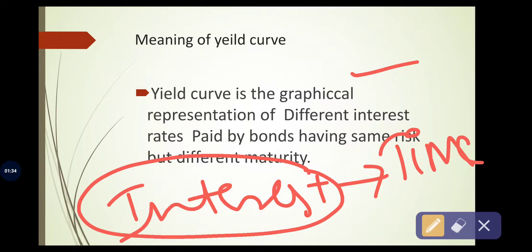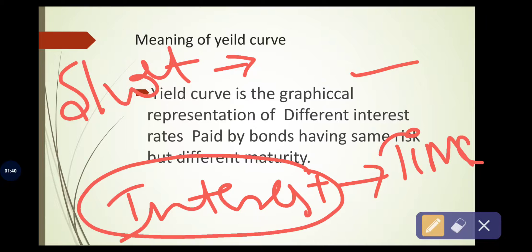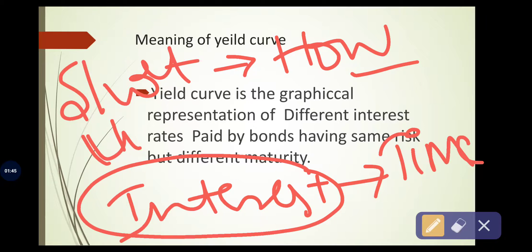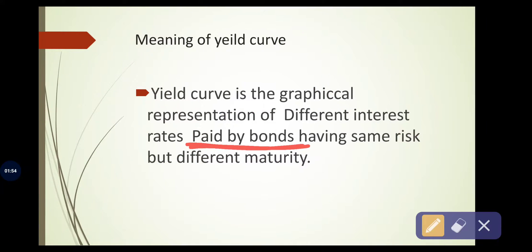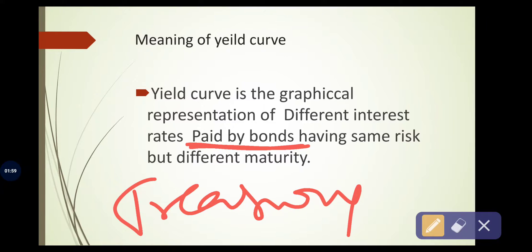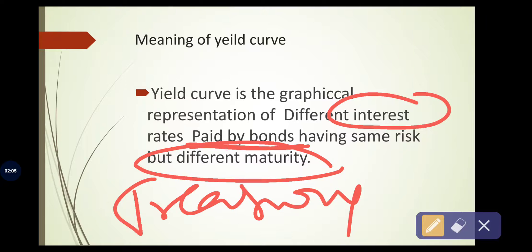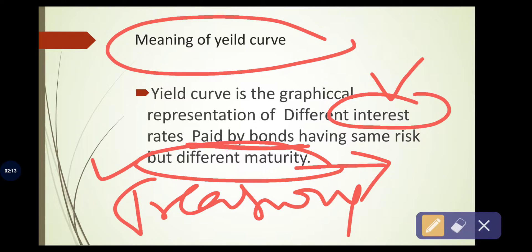For example, in short-term periods, how much interest is earned by bondholders, and in the long term, how much interest they are getting. Simply, it is talking about the interest payments of bonds and treasury bills issued by the central government — interest rates with reference to maturity. When we graphically represent interest with respect to time period, it is called a yield curve.